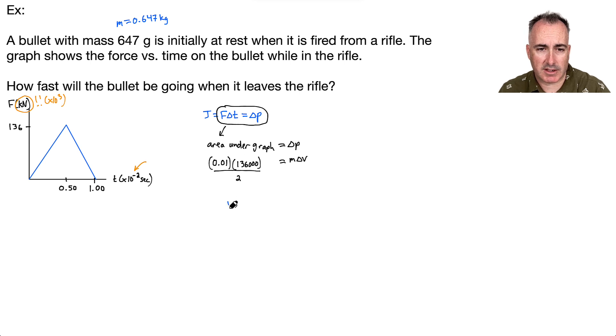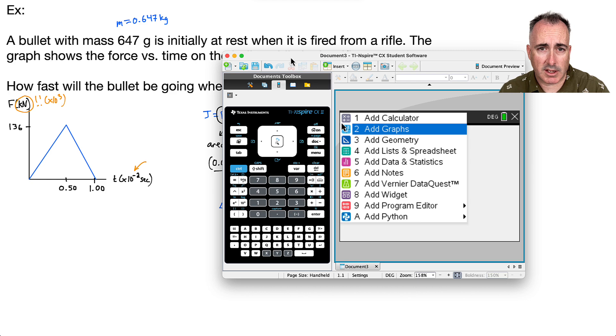Can you see, I can just then get V by itself. Because keep in mind, delta V is going to be the change in velocity, but it started off at rest. So that means the final speed will be this. We can just find delta V. So delta V is going to equal all this stuff over here divided by the mass. So it's 0.01 times 136,000 divided by 2 and divided by the mass, which is 0.647. Let me just do that on my calculator.